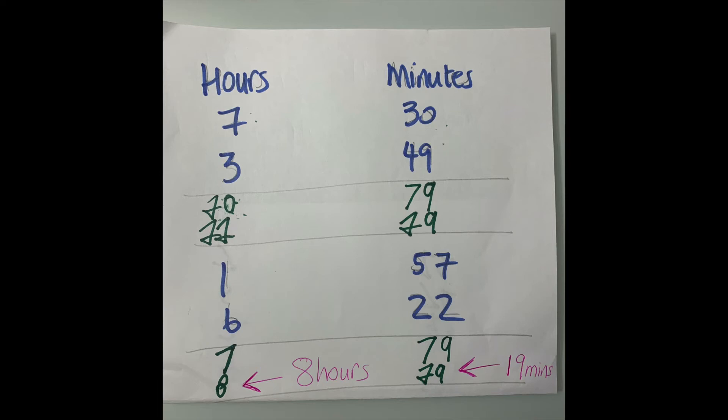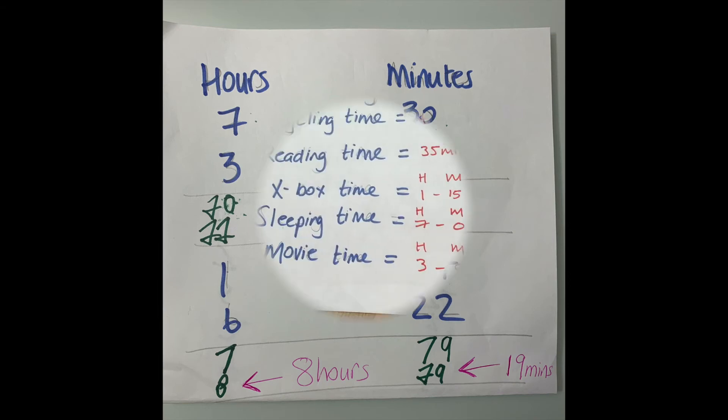How does that become eight hours — what did you do with the seven? I added the hour that I took from the minute side and put it on the hour side, because it had added up to an hour and they are meant to be kept separate. Very good — so I separated them and put them together at the end, in the right place.